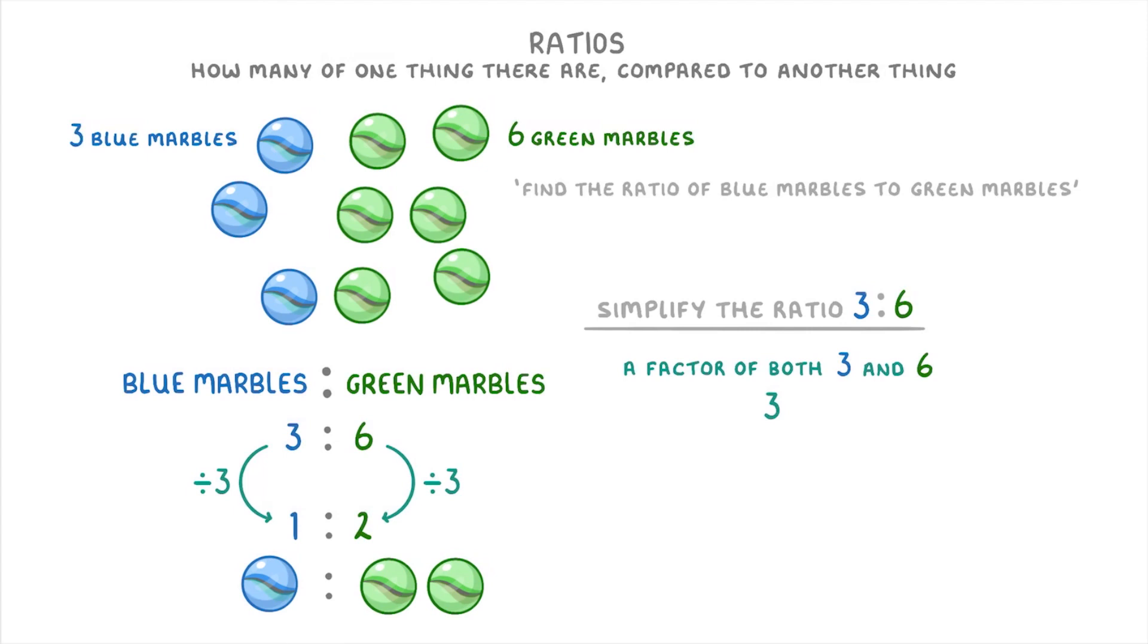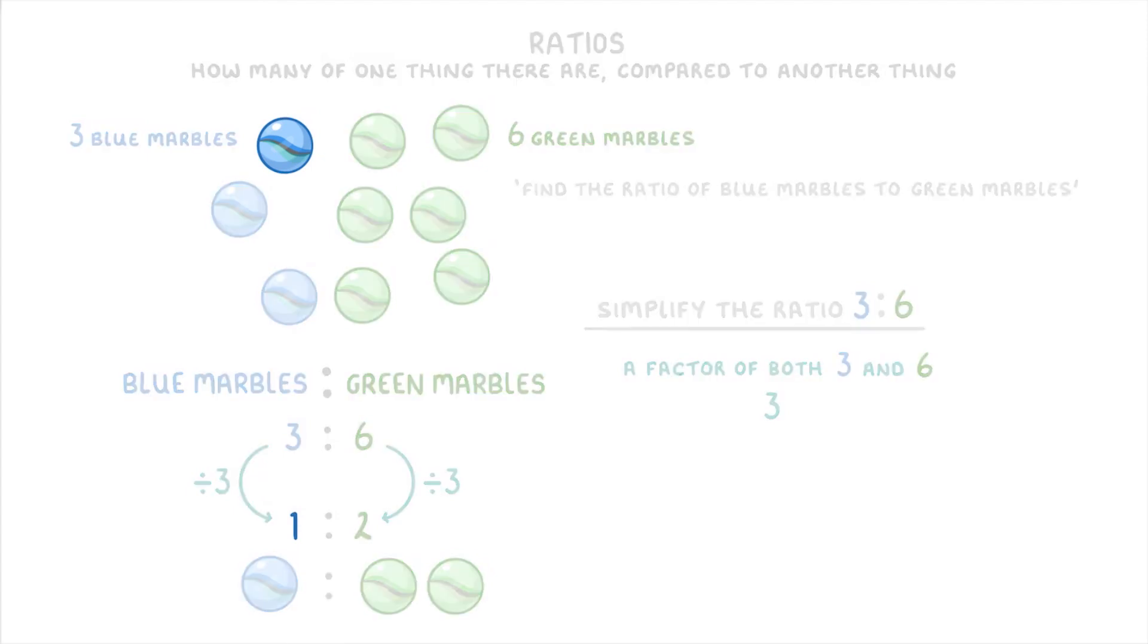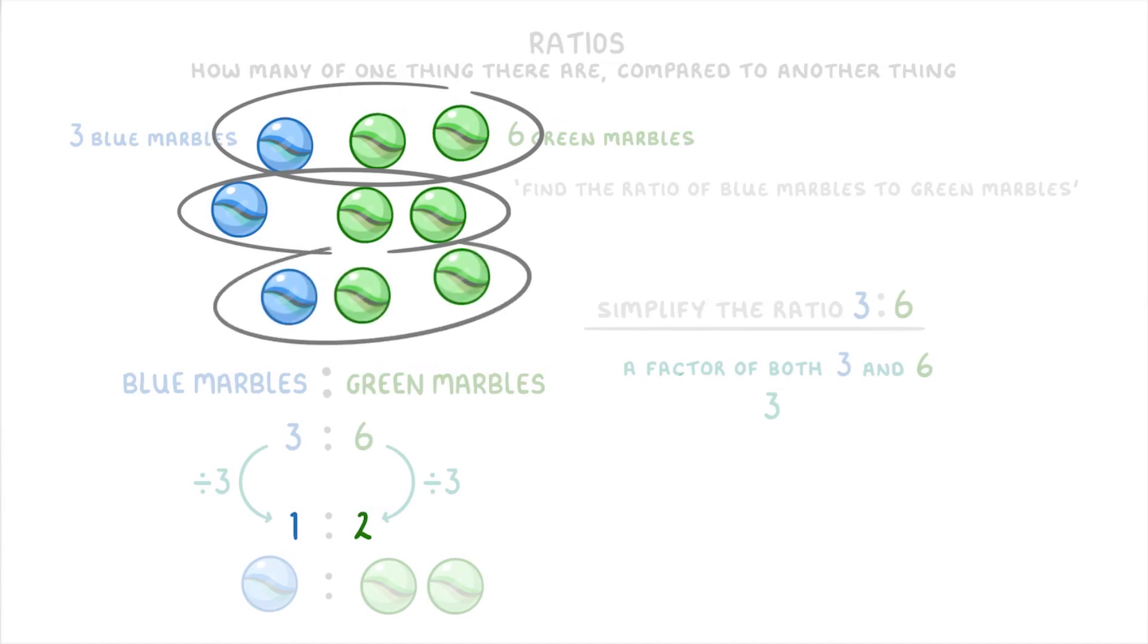To see what I mean, if we look back at our original marbles, we can see that for this top blue one, there are these two green marbles. Then for this middle blue one, there are these two green ones. And for the bottom blue marble, there are these two green ones. So for every one blue marble, there are two green marbles.